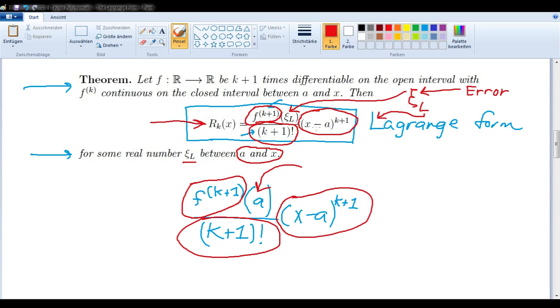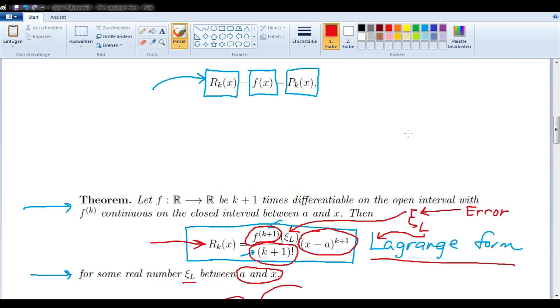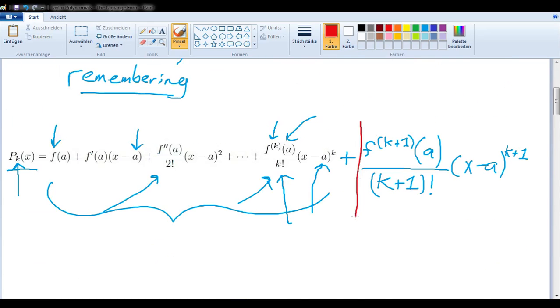That is the only difference between the Lagrange form and just simply adding one more term to the Taylor polynomial. You act like you want to add one more term, and you simply sub in the name of the variable that you're using.